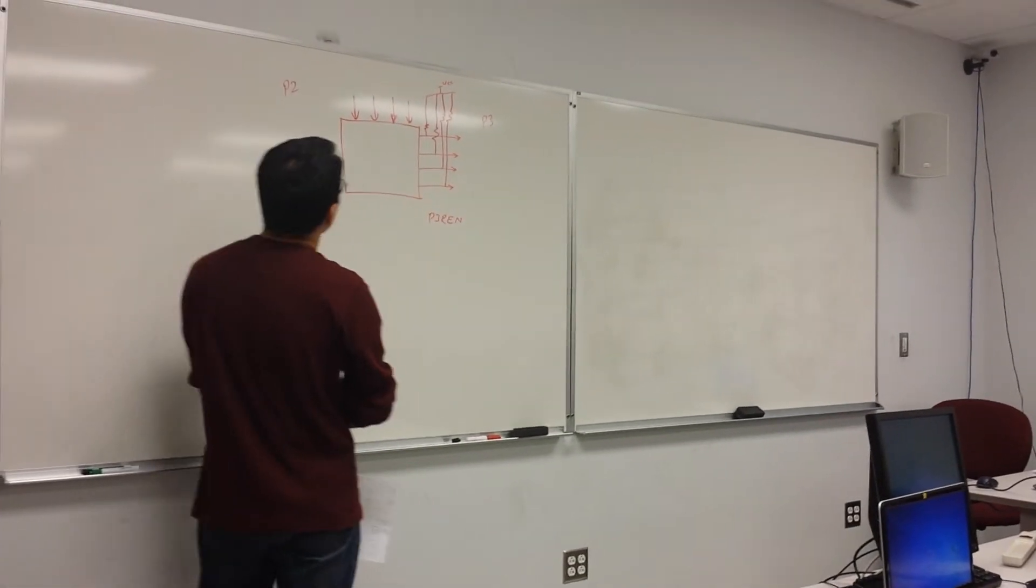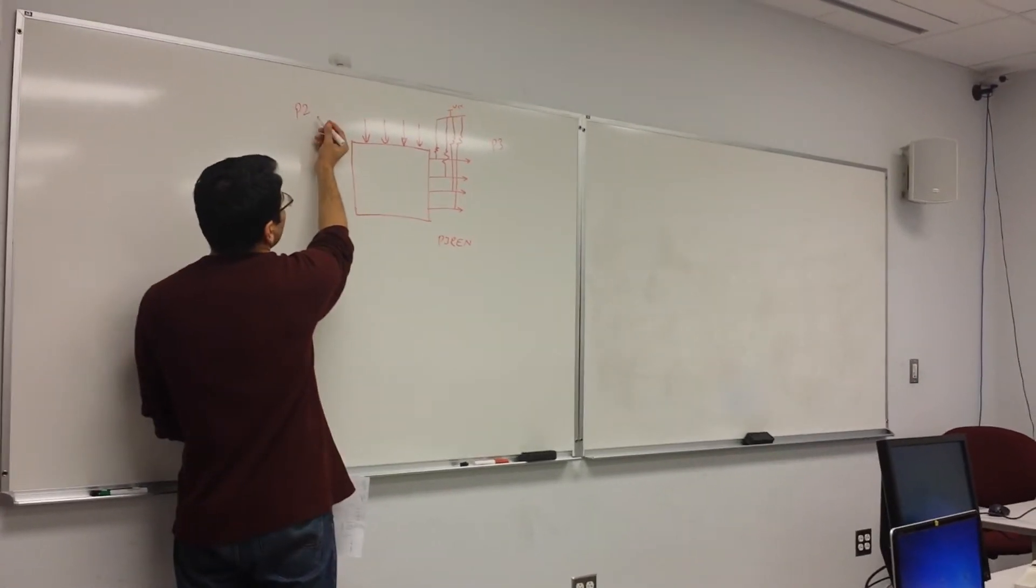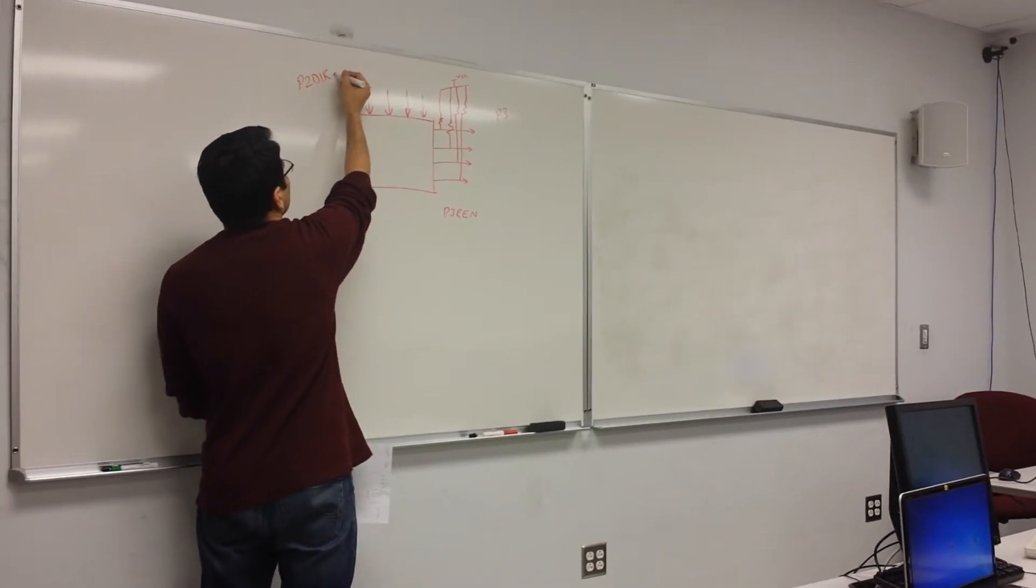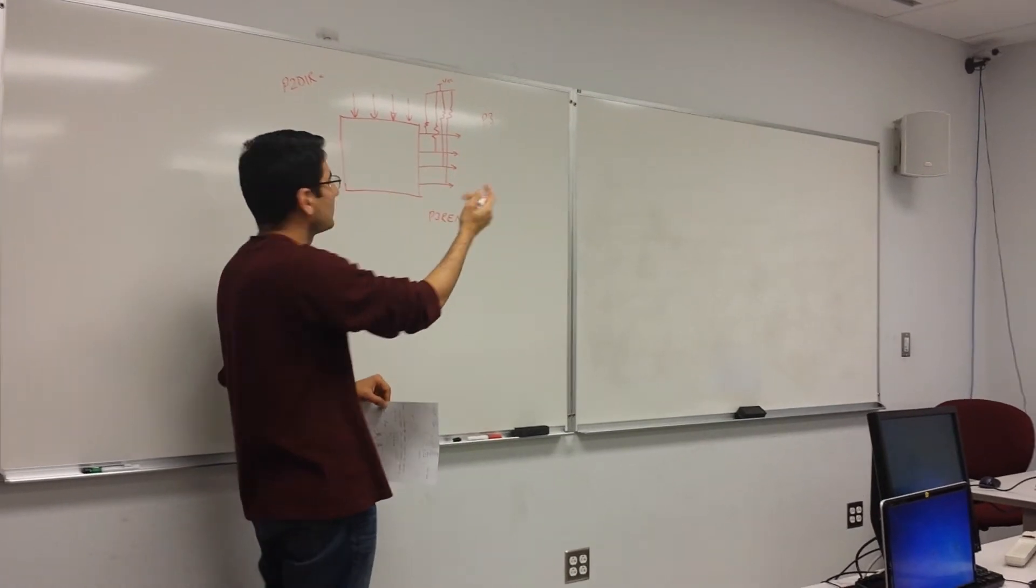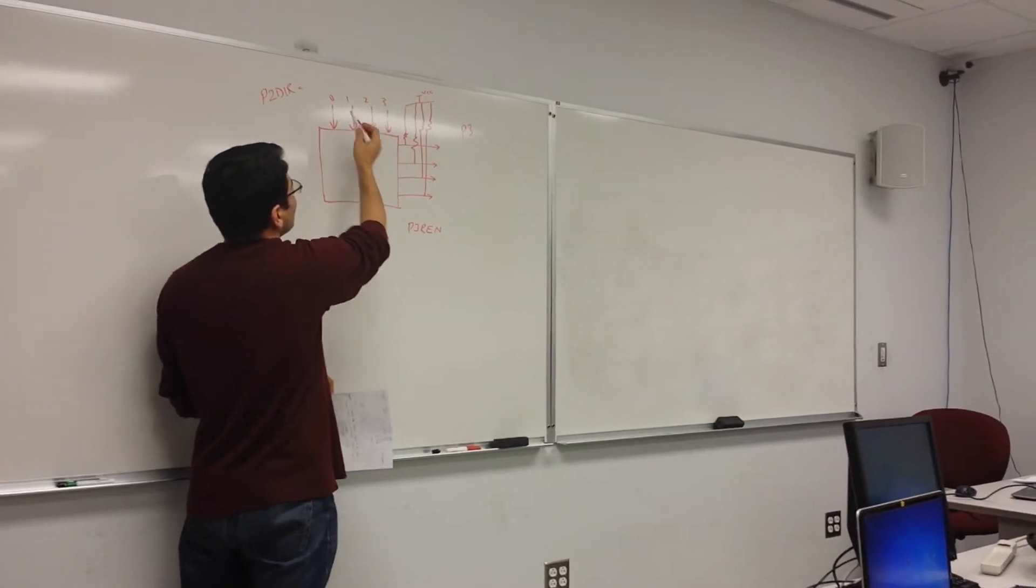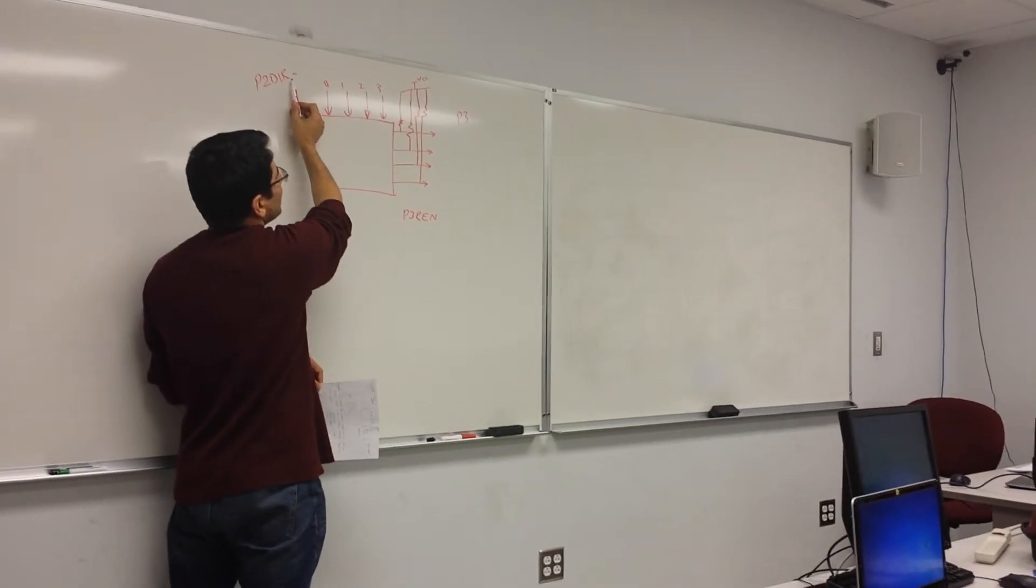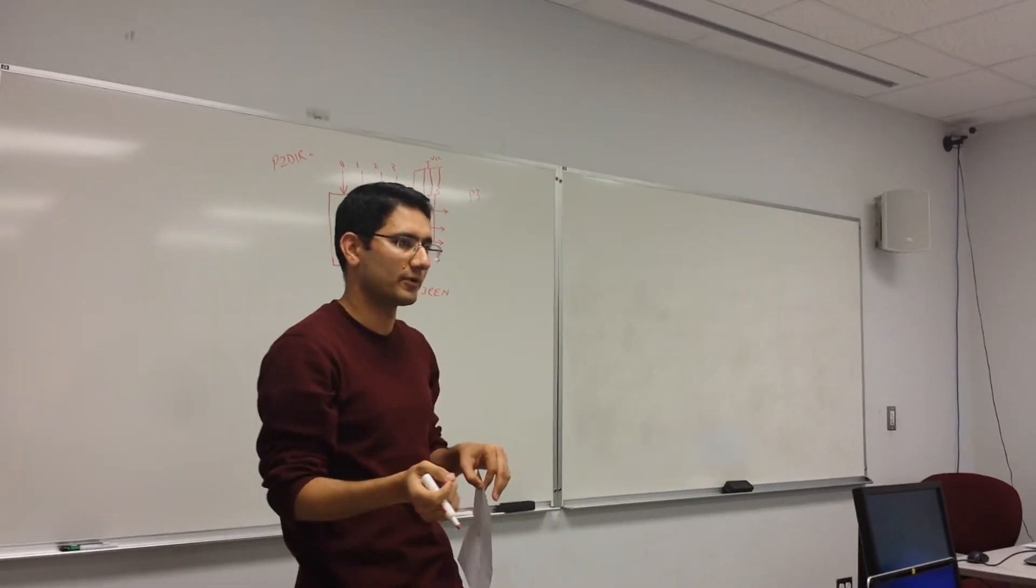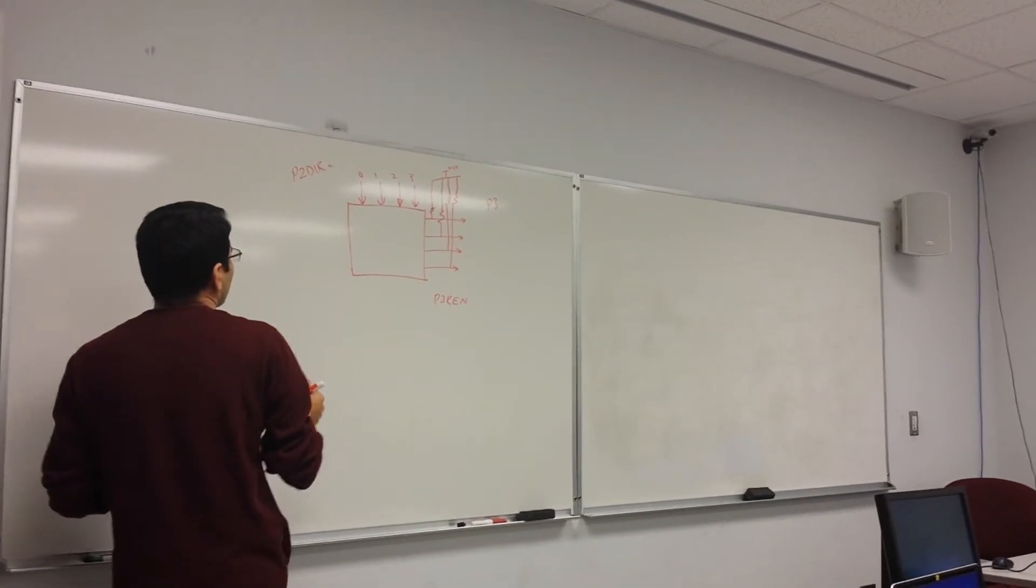On top of that, we have the P2DIR has to be equal to... Let's say if this is bit 0, 1, 2, 3. So it means it should be bit 0, bit 1, bit 2, bit 3. So we have to change the direction to the output mode.